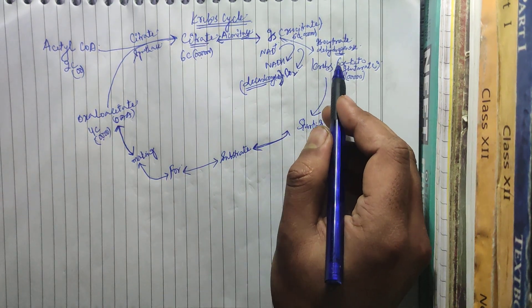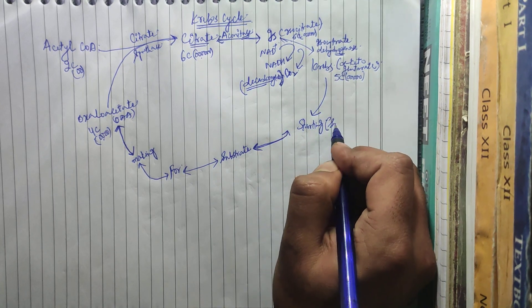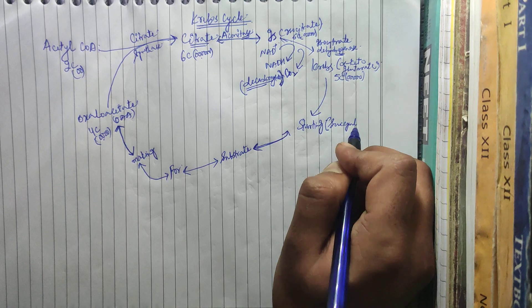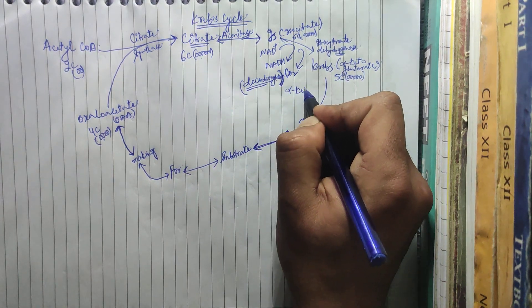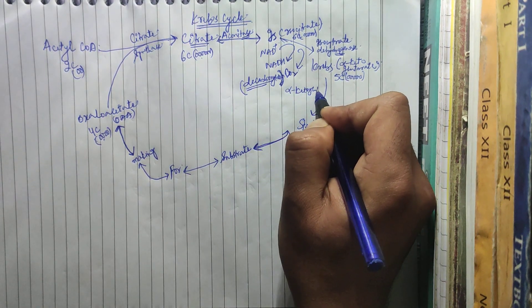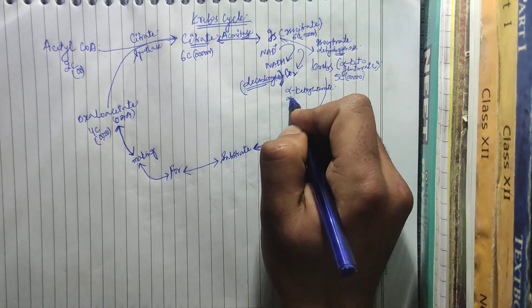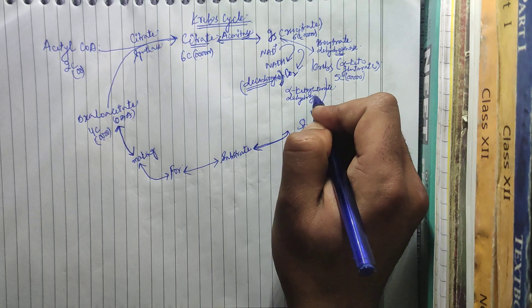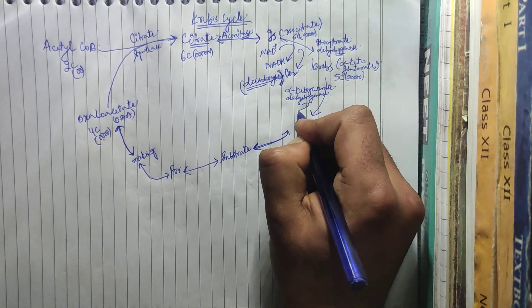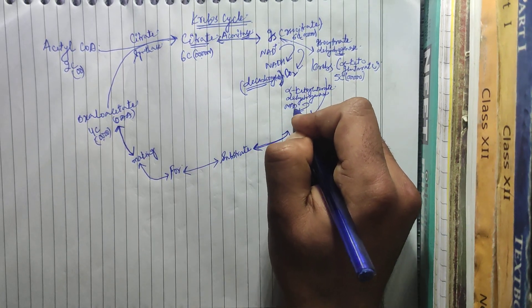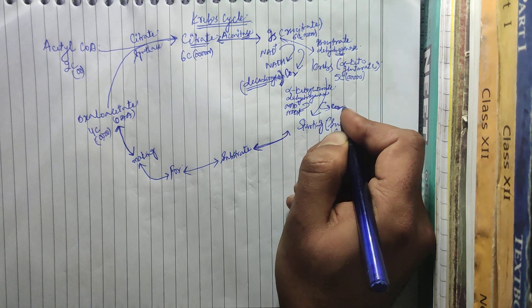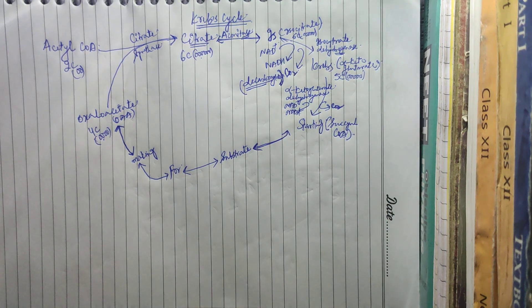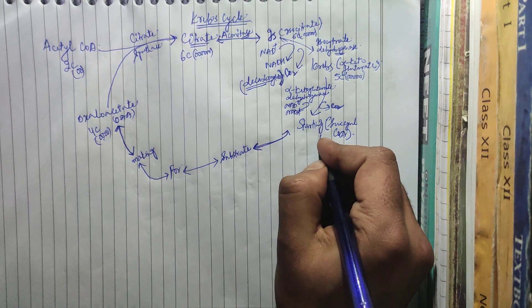Alpha-ketoglutarate gets converted into succinyl-CoA in the presence of an enzyme, alpha-ketoglutarate dehydrogenase. Here also, NAD⁺ gets converted into NADH, and one carbon dioxide gets released. Succinyl-CoA is a 4-carbon compound.